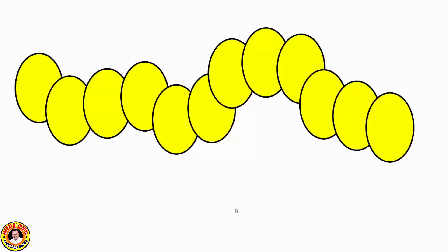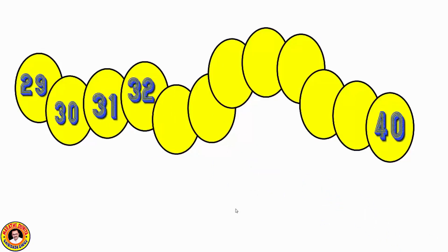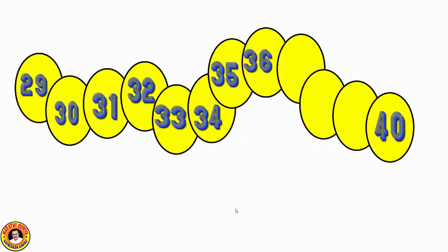Now it's time to recite all numbers between those numbers in serial order in a number chain. Look at this number chain — the first number is 29 and the last number is 40. We put numbers after 29: 30, 31, 32, 33, 34, 35, 36, 37, 38, 39. We complete the number chain from 29 to 40.